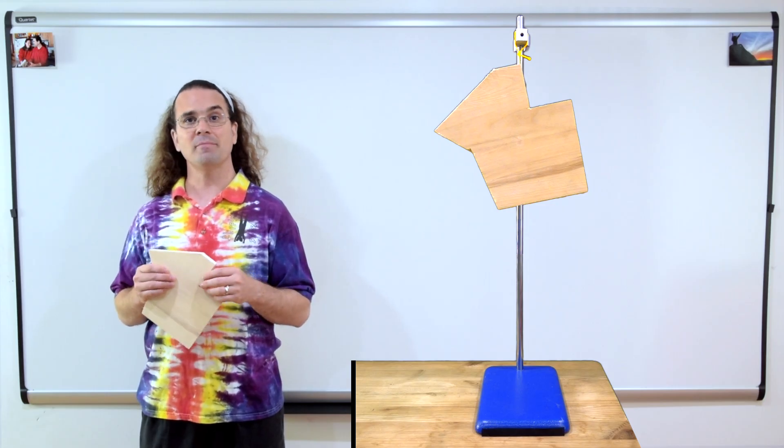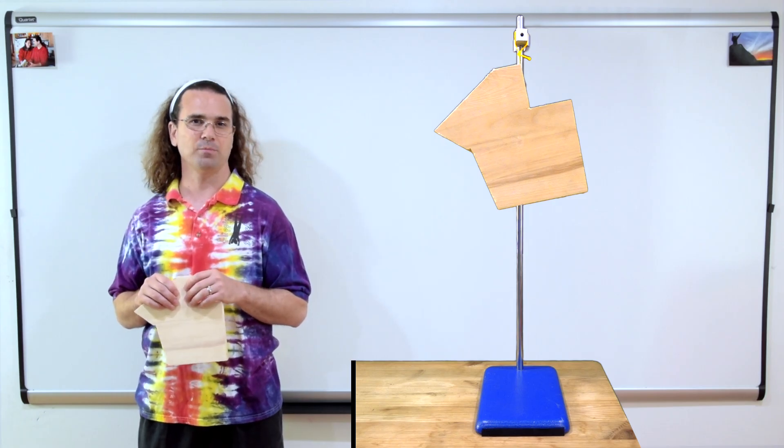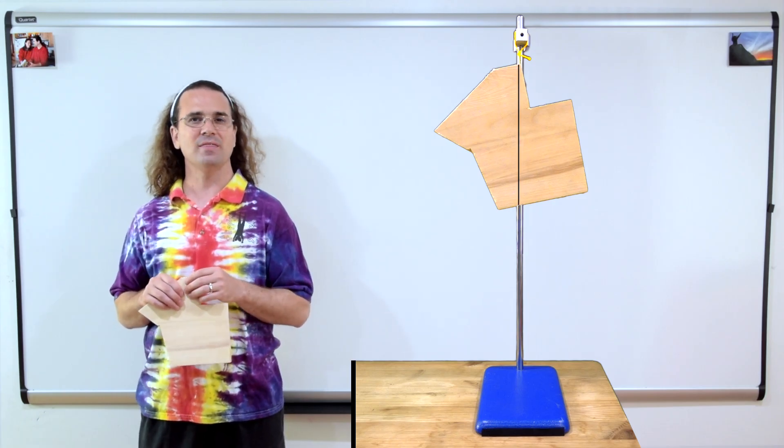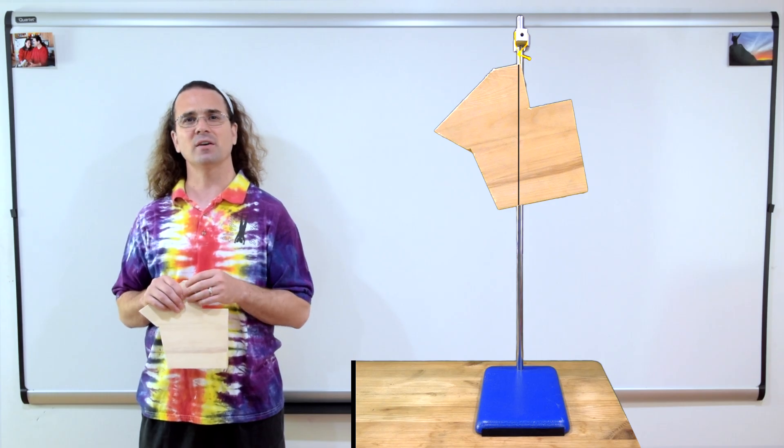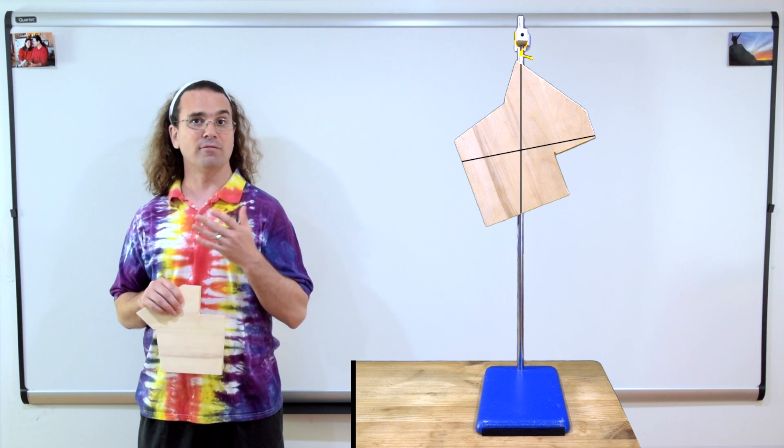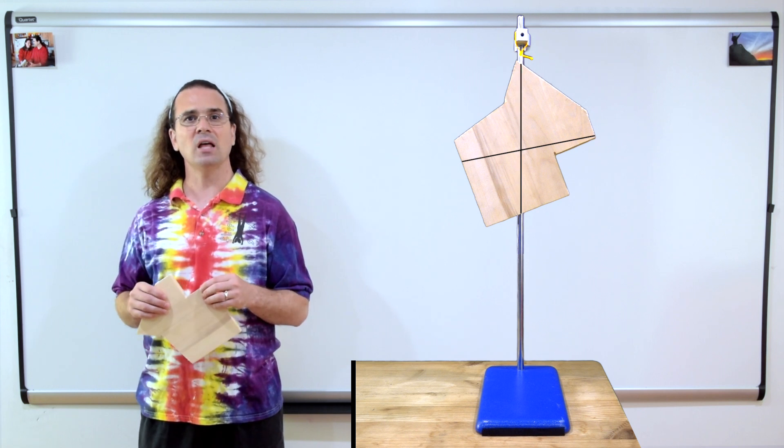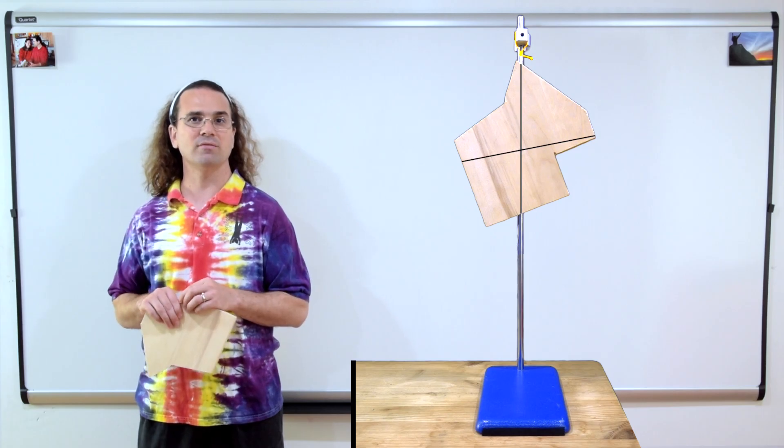That means the center of mass of the irregularly shaped piece of wood must be below the point where it is hanging from. If we draw a vertical line there, the center of mass must be along that line. We can then rehang the wood from a different point and again draw a vertical line from the hanging point. The intersection of those two lines must be where the center of mass of the wood is.